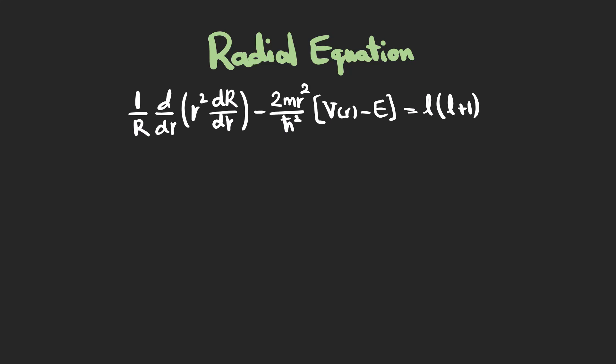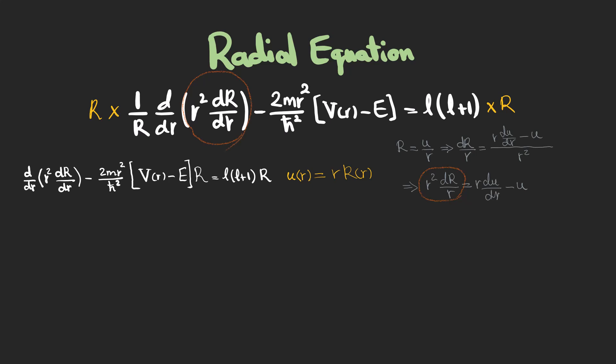To solve this differential equation, first multiply both sides by R which yields this one. Using a new function called UR, now we should write R and its second derivative in terms of U. Now this term is exactly like this term in the equation and can be transformed into an expression solely dependent on U.